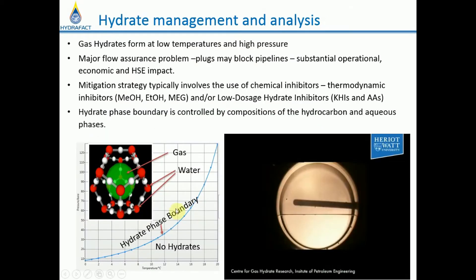Gas hydrates are crystalline compounds formed as a result of the combination of water and suitable-size molecules at low temperature and high pressure conditions. They resemble ice but, unlike ice, can form at temperatures well above zero. Their formation in oil and gas pipelines can result in pipeline blockage and serious operational and safety problems, as well as significant economic impact due to loss of production and the cost associated with blockage removal.